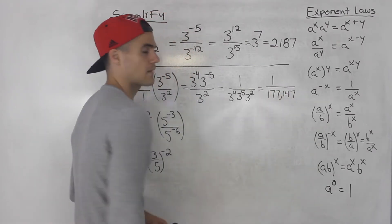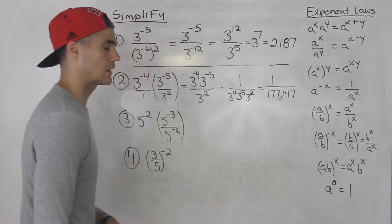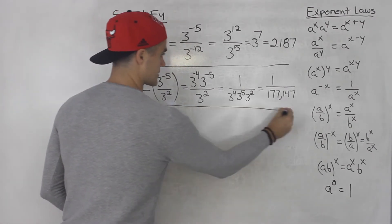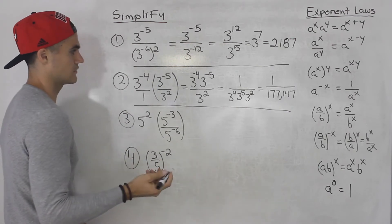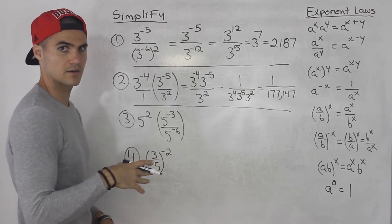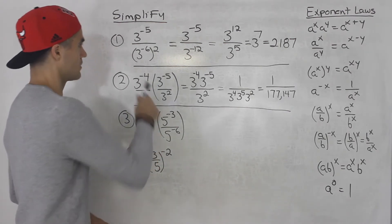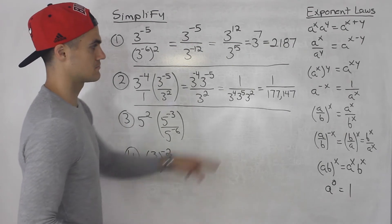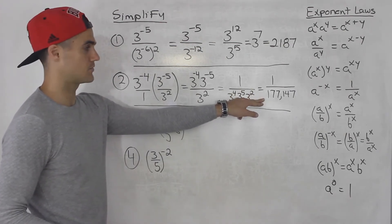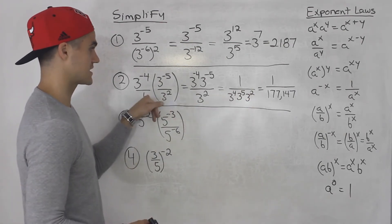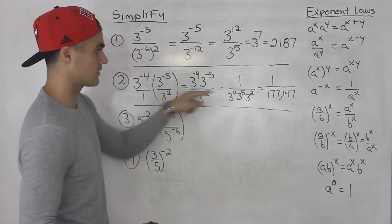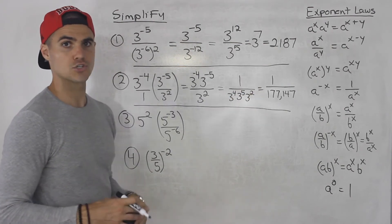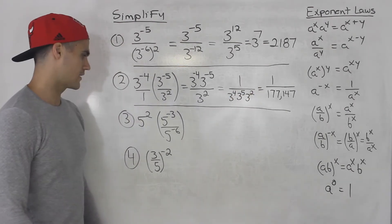That's what 3 to the power of 11 is — that's the answer for number 2. You can check these in your calculator by plugging in the original expressions. If you get a decimal, take 1 divided by that number and it should match.